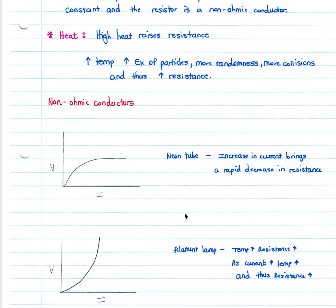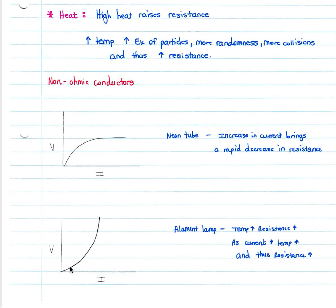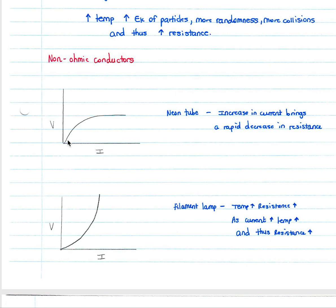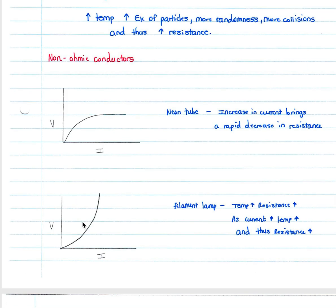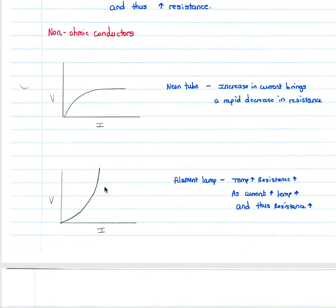For interest, non-ohmic conductors show non-constant resistance. A neon tube is one example: an increase in current brings a rapid decrease in resistance. A filament lamp is another: as current increases, temperature rises and thus resistance increases exponentially. Unlike the neon tube where resistance decreases, the filament lamp shows an exponential increase in resistance.